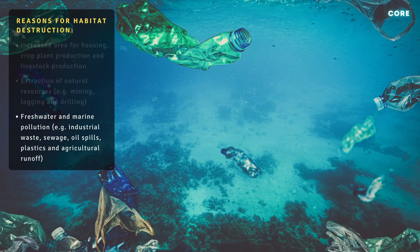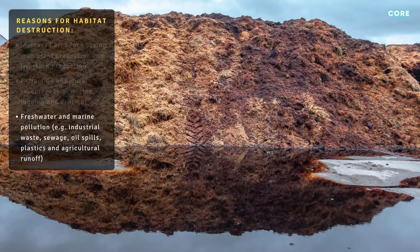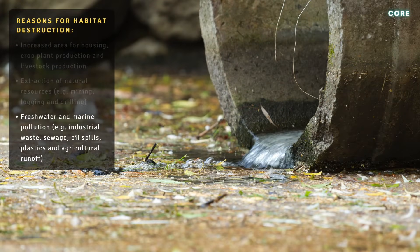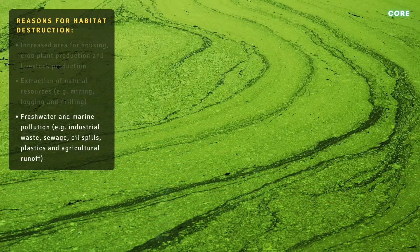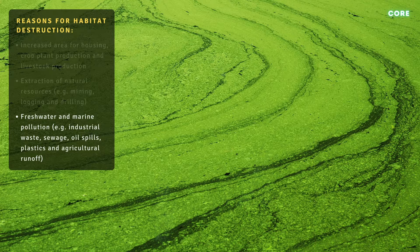Plastics in particular take a very long time to degrade, so their impact on habitats is long-lasting. The runoff of fertilisers and animal waste from farmland and the discharge of human sewage into rivers supplies an excess of nitrates and phosphates to the microscopic algae in the water. The resulting algal bloom deprives other aquatic organisms of oxygen in a process called eutrophication. More on this in our next lesson.